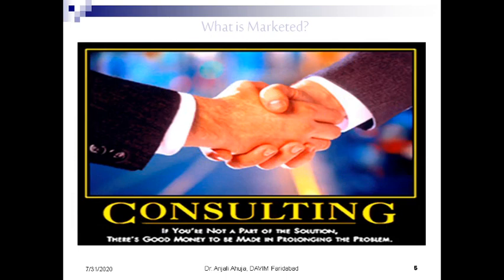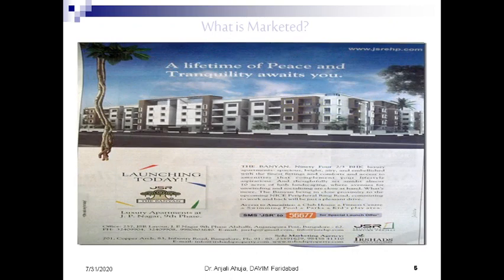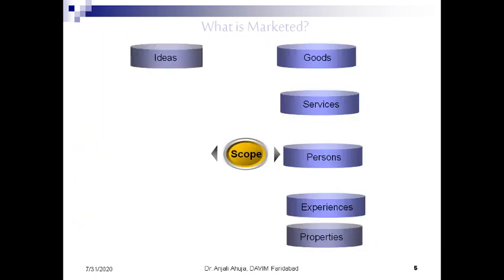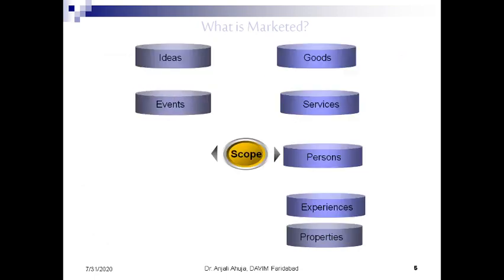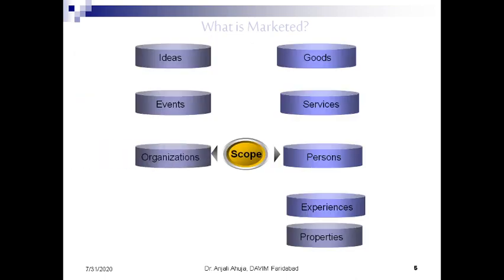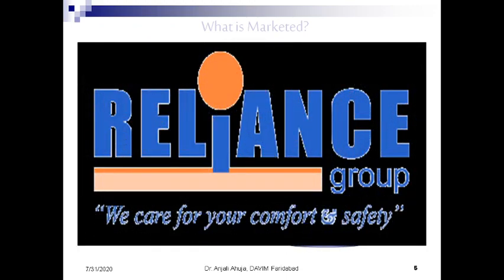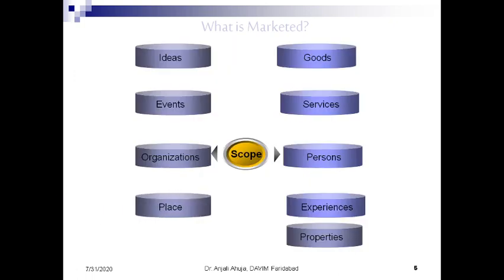Property is also part of marketing — we see various property ads daily in the newspapers. Then ideas are sold through various kinds of books. Events are also marketed — a great example is IPL, where an event is being marketed. Organizations as a whole are also marketed: when we market the name of the organization rather than a particular product, that is marketing of an organization — like an ad for Reliance Group saying 'We care for your comfort and safety.'